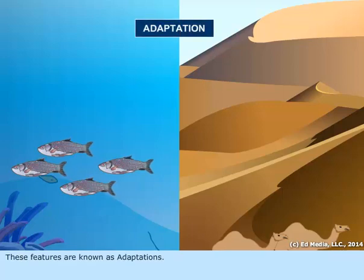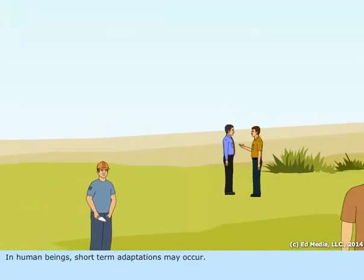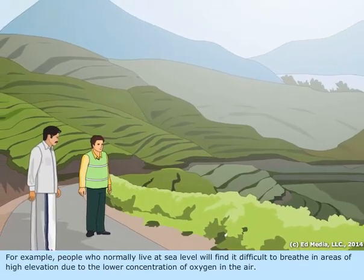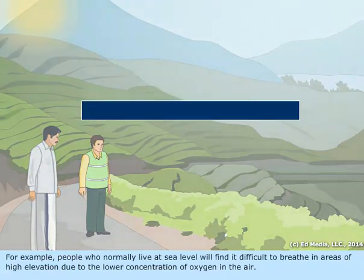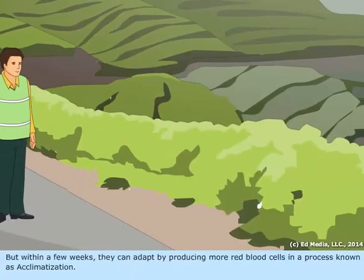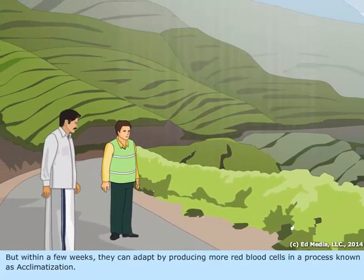All of these special features are present to allow organisms to survive in their surroundings, and these features are known as adaptations. In human beings, short-term adaptations may occur. For example, people who normally live at sea level will find it difficult to breathe in areas of high elevation due to the lower concentration of oxygen in the air. But within a few weeks, they can adapt by producing more red blood cells in a process known as acclimatization.